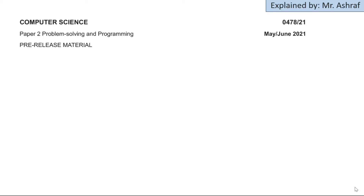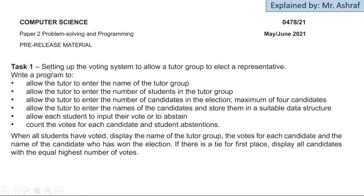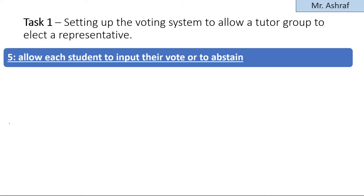Hello and welcome back everyone. This is Computer Science 0478 Problem Solving and Programming, Paper 2. This is the pre-release material pseudocode solution for May/June 2021. In previous sessions of Task 1, we completed points one through four. In today's session, we are going to continue with point number five and point number six.